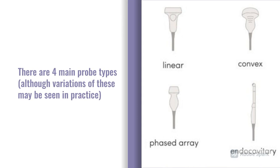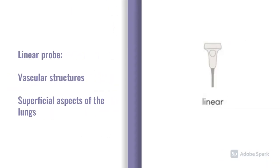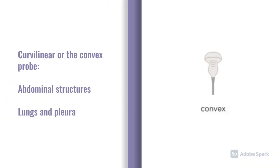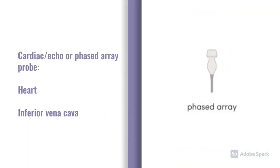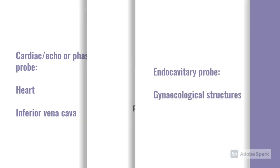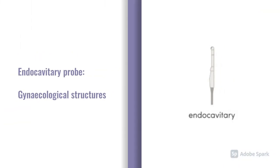There are several probes you'll come across in practice: the linear, curvilinear, cardiac, and endocavatory probes. The linear probe is the one we'll be using for ultrasound guided cannulation — it's good for vascular structures and superficial aspects of the pleura and lungs. The curvilinear probe is useful for abdominal structures and the lungs. The cardiac probe is essentially an echo probe used to look at the heart and IVC. The endocavatory probe is inserted rectally or vaginally, generally used in early pregnancy to look at the uterus and gynecological structures.